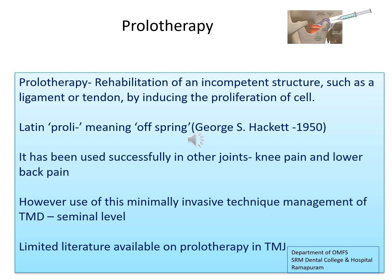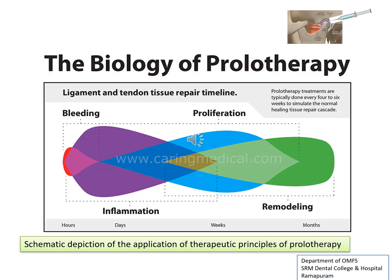Limited literature is available on the application of prolotherapy to TMJ internal derangement. Regarding the biology of prolotherapy, when the body is unable to heal itself — which is often the case when avascular tissues such as ligaments, tendons, cartilage, and fibrocartilage are injured — prolotherapy is utilized to stimulate healing. This is a schematic depiction of the application of the therapeutic principles of prolotherapy, encompassing the inflammatory, proliferation, and tissue remodeling phases of the healing and restoration process of the injured ligament and tendons.